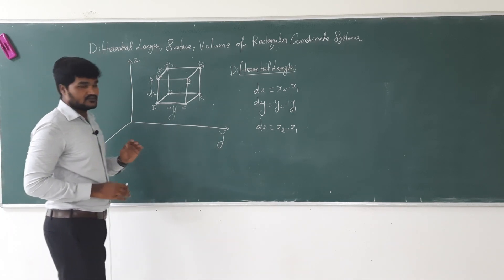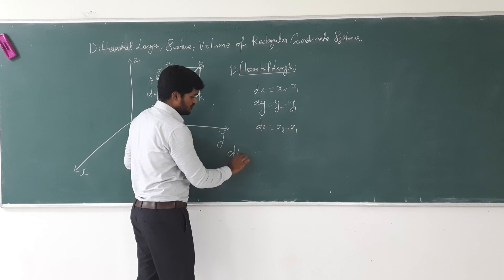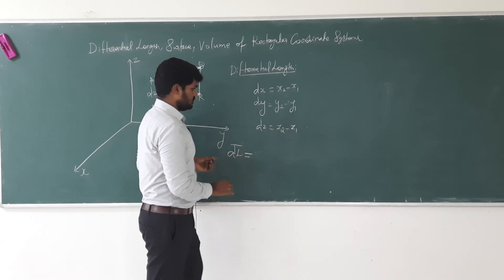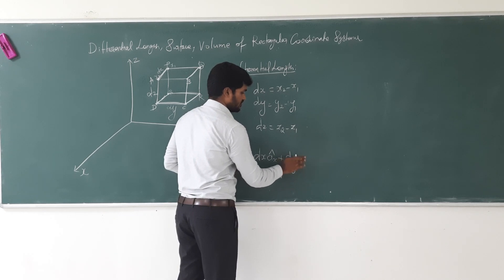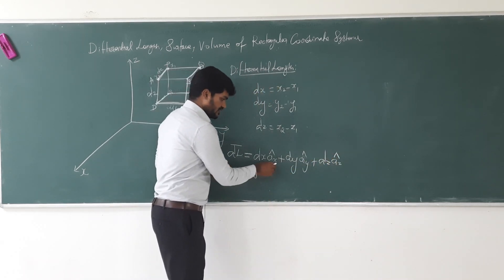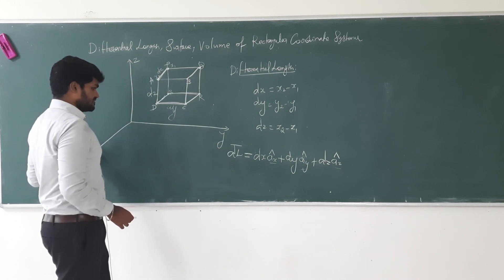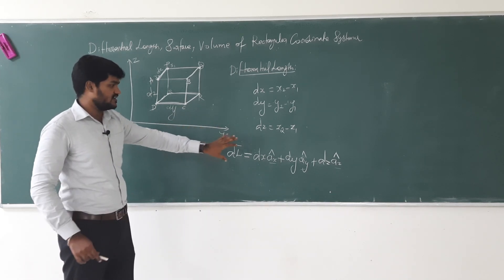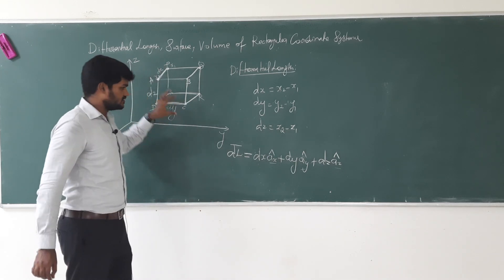Now, what is the overall length? We are going to find the overall differential length of this portion. It is a vector quantity — dL vector. So dL = dx·ax̂ + dy·ây + dz·âz. Here, âx represents the unit vector of the x direction, ây represents the unit vector of the y direction, and âz represents the unit vector of the z direction. This is the differential length of this portion.